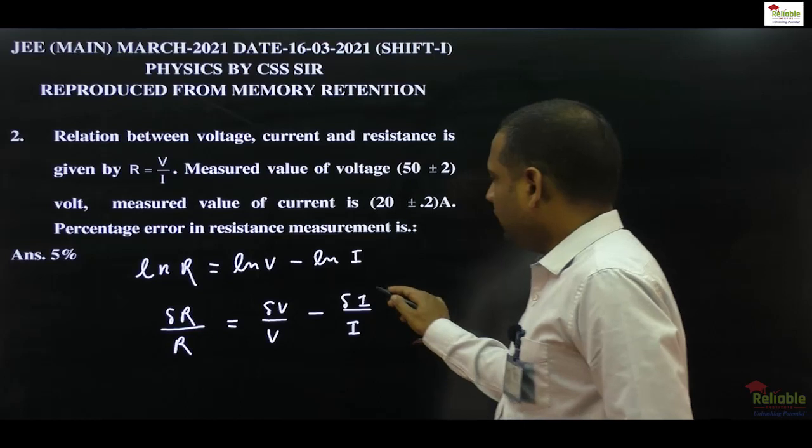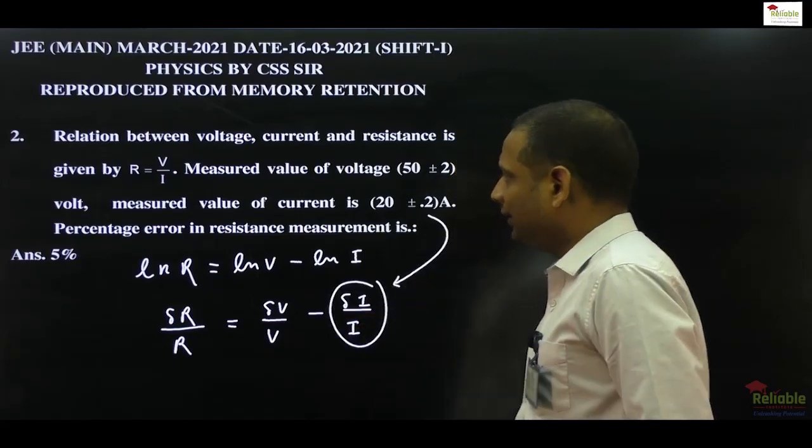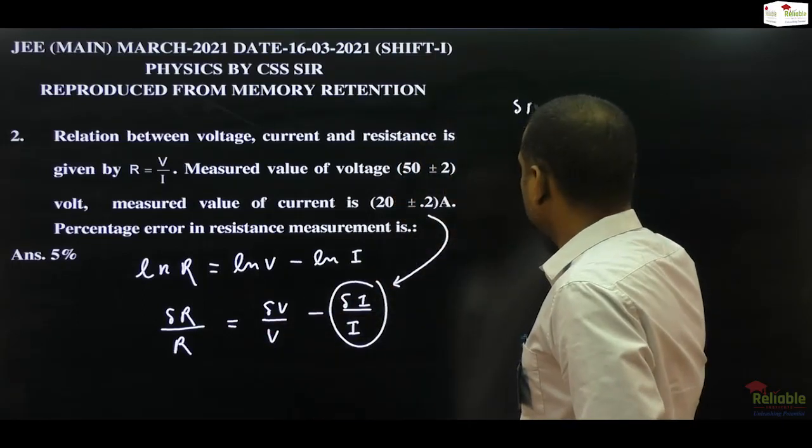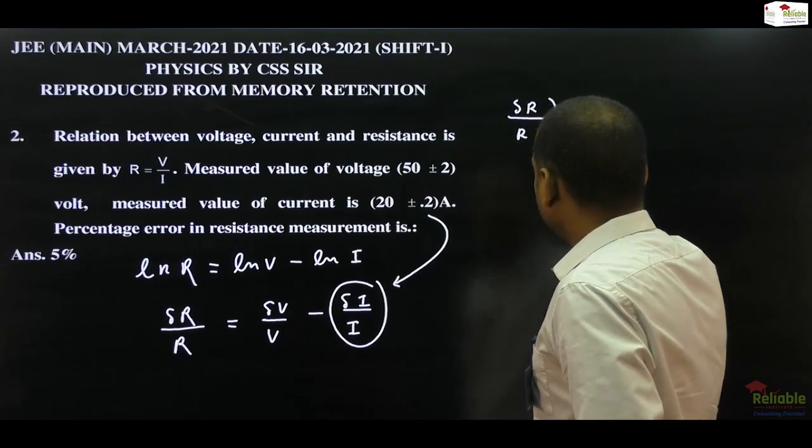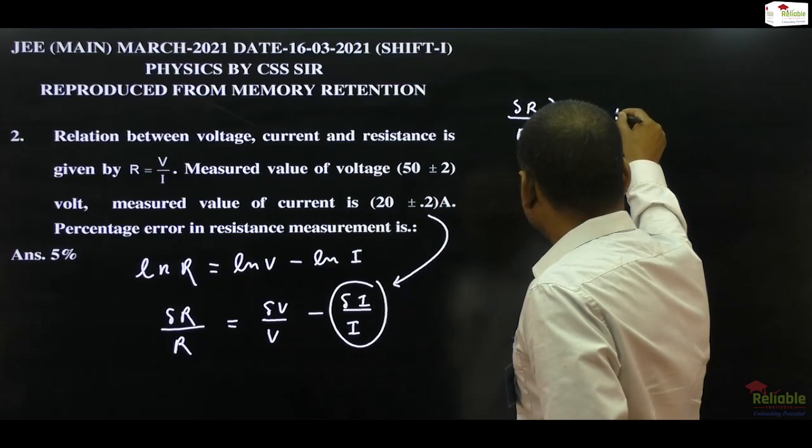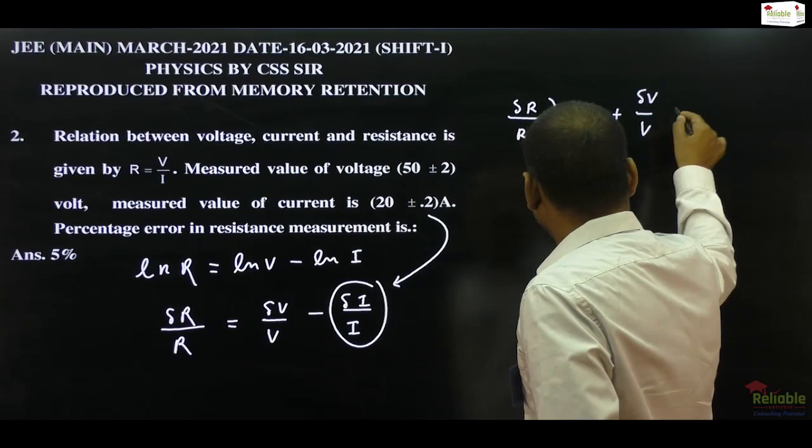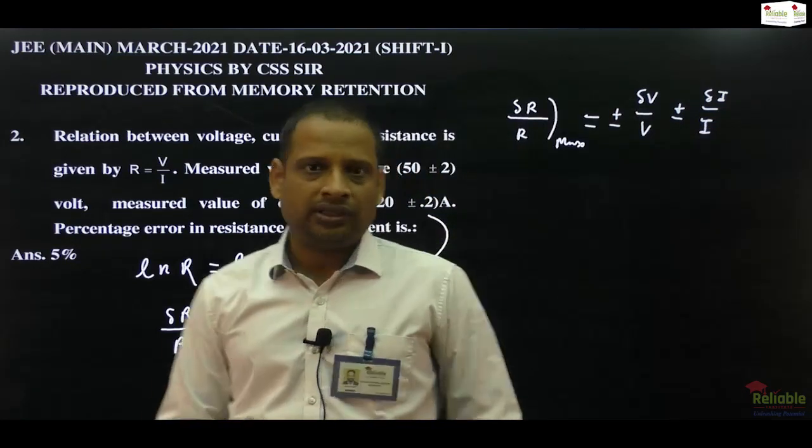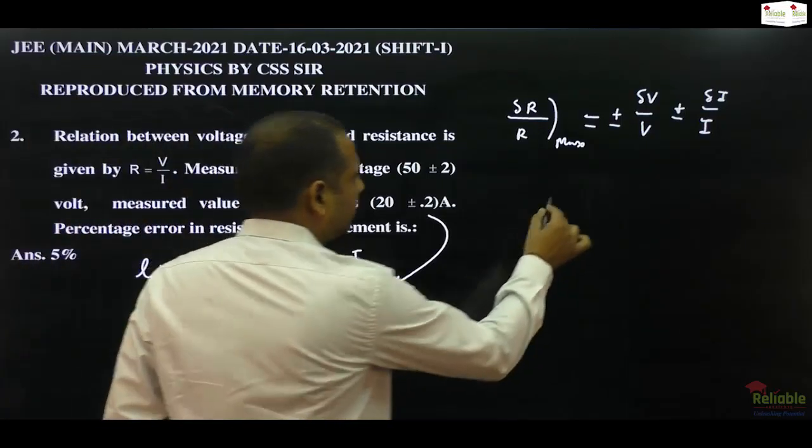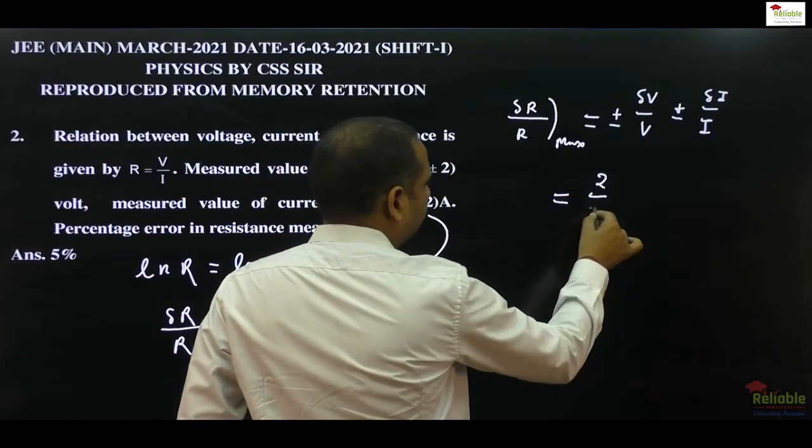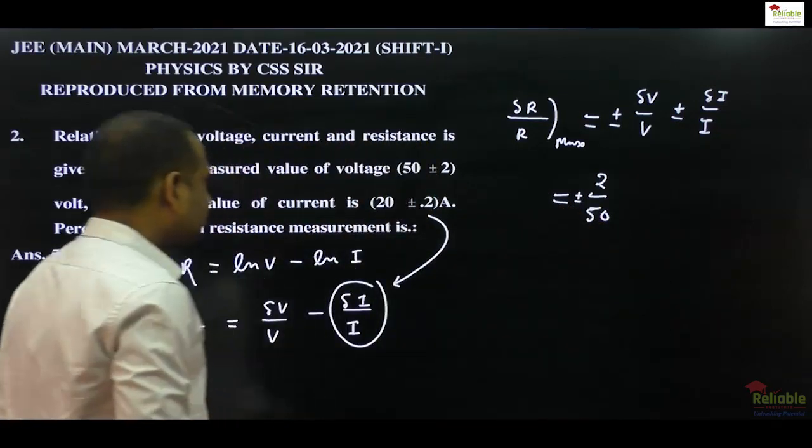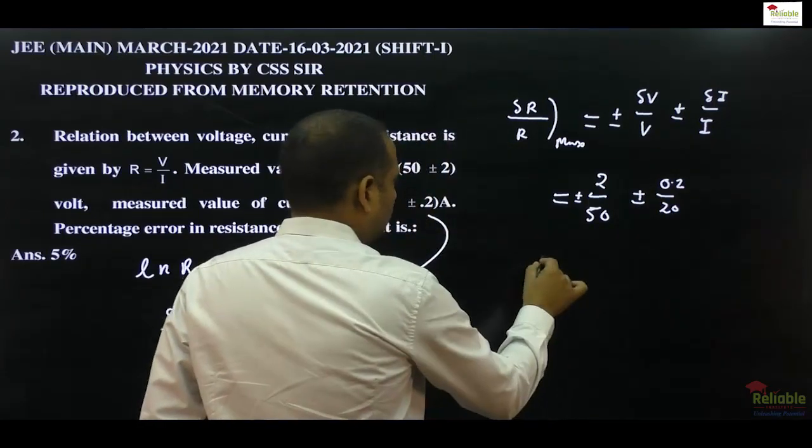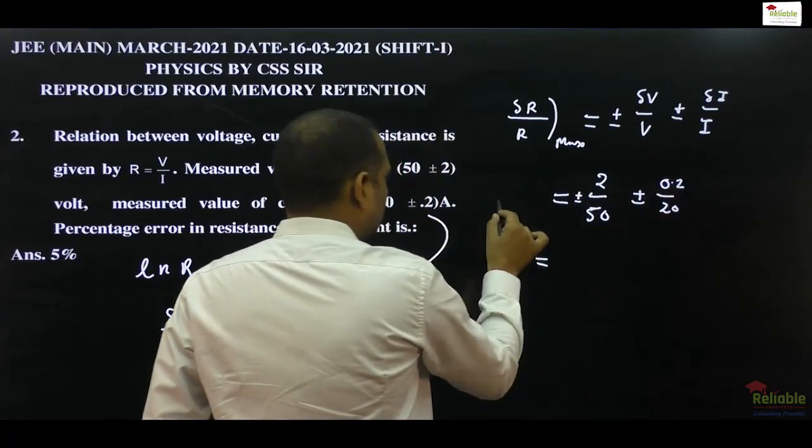So there is an error of plus minus 0.2 in current, an error of plus minus 2 in voltage, and I want to calculate maximum permissible error in resistance. If I want to calculate del R by R ka maximum value, then it will be plus minus del V by V plus minus del I divided by I. You want to know the percentage error - this is fractional error, and if you want to calculate percentage, you have to multiply by 100. So del V is 2, divided by 50 gives us 2/50. Del I is 0.2, divided by 5 gives us 0.2/5, which equals 1/25. When we take 100, your percentage error will be...